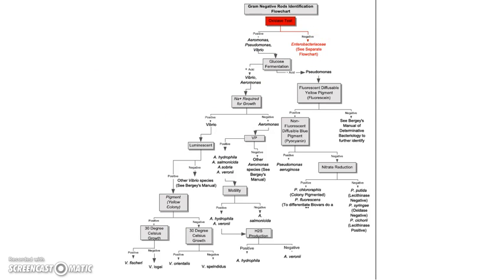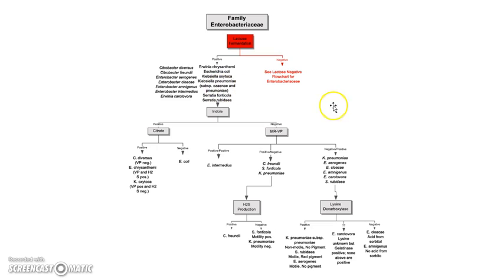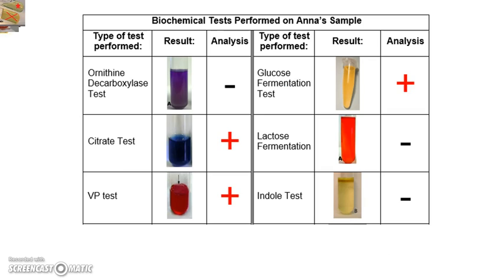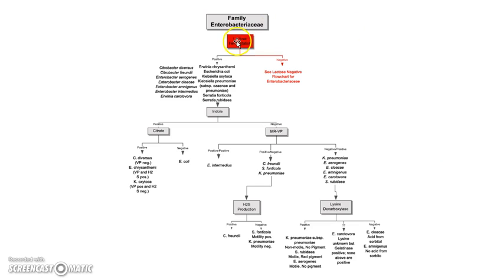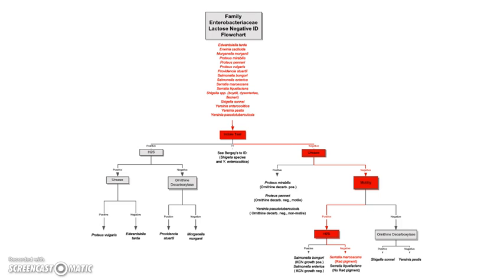The next chart shows that the next test we need to look at is the lactose fermentation. Ana's lactose fermentation results show a negative test. Back to the flow chart — lactose fermentation negative shows that we also need to continue on to the next flow chart, which is the next page. We're not going to go to the positive side; we're going to go to the negative. That brings us to our third and final flow chart.